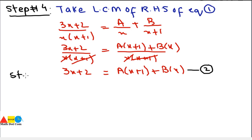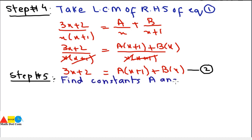Step number 5: find the constants a and b. We find them using the values of x from the factors. The two factors give us x = 0 and x = −1. By putting these values of x into equation 2, we can find the values of a and b.